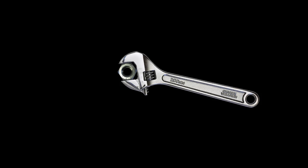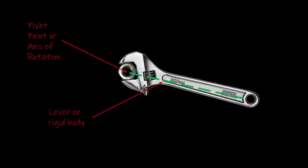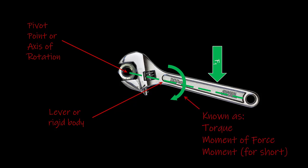Let's begin with a review of torque. When we are talking about torque, it's first important to go over some of the components that are necessary to create torque. First, we have to have a lever or a rigid body. Next, we have to have a pivot point or an axis of rotation. Third, we're going to apply a force that's some distance from that axis of rotation. That's going to cause a torque, also known as a moment of force, or moment for short.